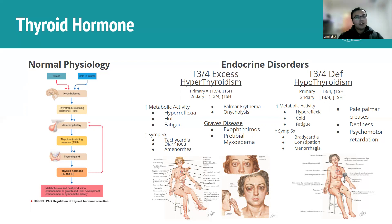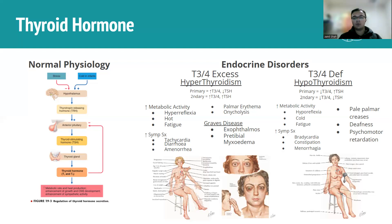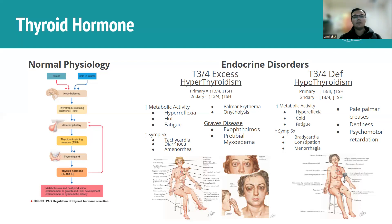With hyperthyroidism, we expect increases in metabolic activity: hyperreflexia, heat intolerance due to an increased basal metabolic rate, and fatigue from the body being on overdrive. You'll also see increased sympathetic symptoms — tachycardia and diarrhea caused by increased gut motility. Think of everything as being overactive, which explains diarrhea rather than constipation.